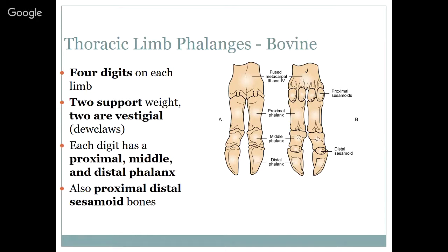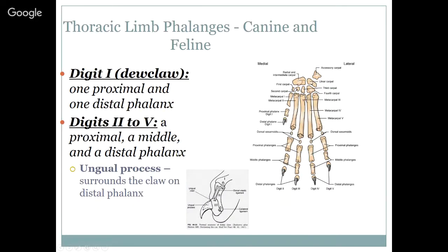With bovine phalanges: they have third and fourth digits with four digits on the limb — the third and fourth support weight, the second and fifth are vestigial dewclaws. Each digit has a proximal, middle, and distal phalanx, plus proximal and distal sesamoid bones. For canine and feline, digit one is the dewclaw — usually just one proximal and one distal phalanx, sometimes removed. Digits two through four have a proximal, middle, and distal phalanx. On the last phalanx there's an ungual process which surrounds the claw — it's when we cut into that ungual process that we get bleeding and pain.